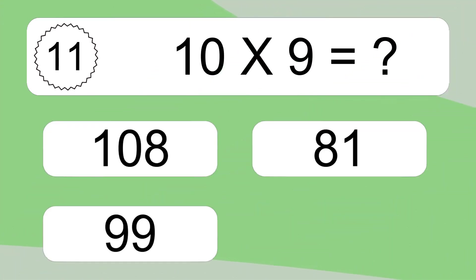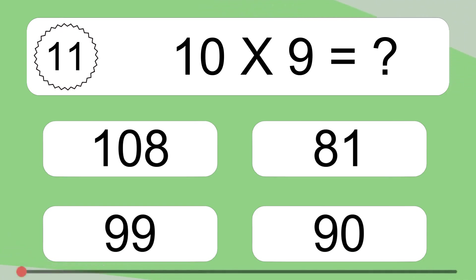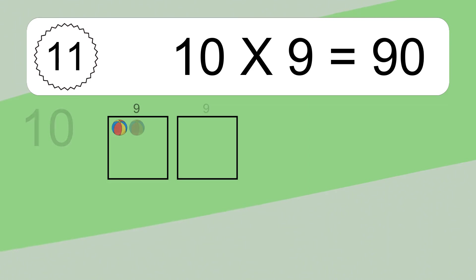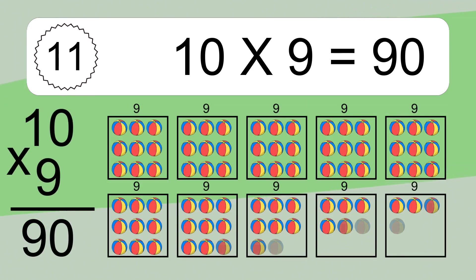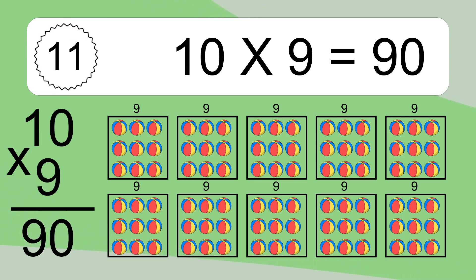Ten times nine equals what? Ten times nine equals ninety. We have ten boxes, and each box has nine colorful balls inside. If you count all the balls in all the boxes together, you will have ten times nine balls. This equals ninety balls.